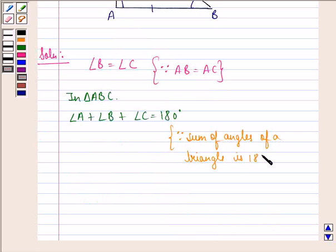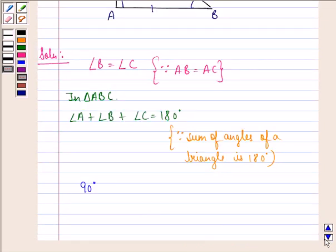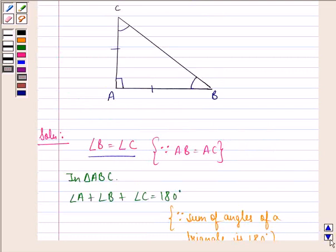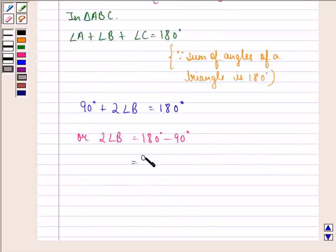Or we can say that 90 degrees, because angle A is 90 degrees, plus twice angle B, because angle B is equal to angle C, is equal to 180 degrees. Therefore, twice angle B is equal to 180 degrees minus 90 degrees, that is equal to 90 degrees.